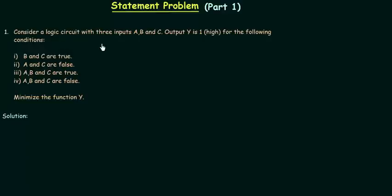Consider a logic circuit with three inputs A, B and C. Output is Y and it is high for the following conditions. There are four conditions depending upon them. Output Y is high.